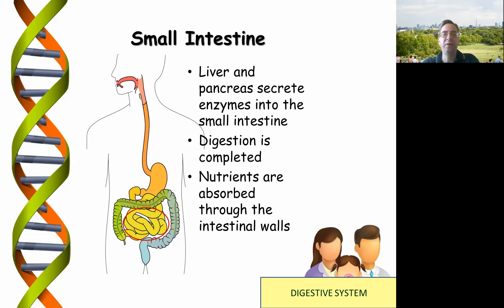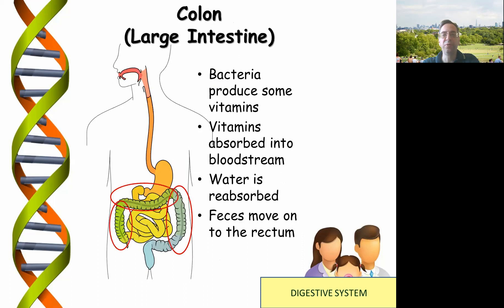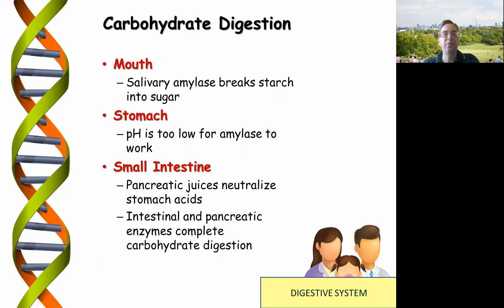In the small intestine, the liver and the pancreas release various enzymes into it, which completes the digestion and absorption of nutrients through the intestinal walls. The colon contains bacteria which produce some vitamins; these vitamins are absorbed into the bloodstream, and the colon reabsorbs water before waste moves out.